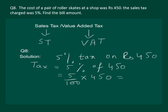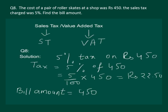Solving that, you will get Rs. 22.50. So the billing amount will be — remember, sales tax is added to the sale price — so the sale price was Rs. 450 plus the tax of Rs. 22.50, which amounts to Rs. 472.50. Hence, after including the tax, a customer will have to pay Rs. 472.50 for an item that actually costs Rs. 450.